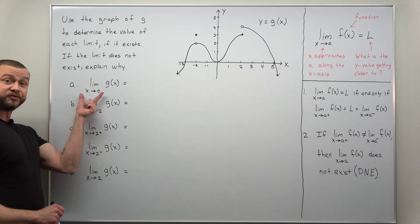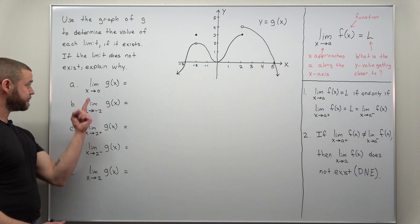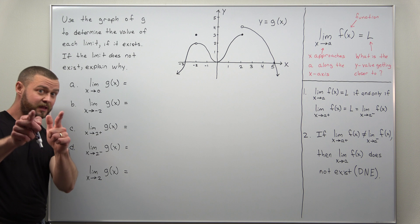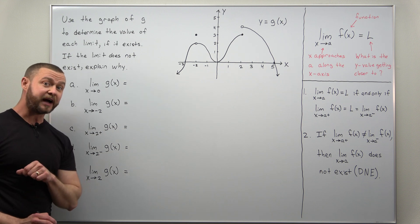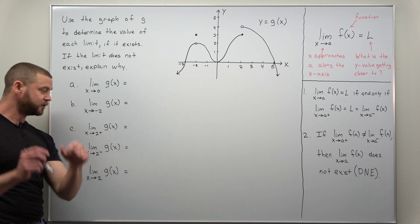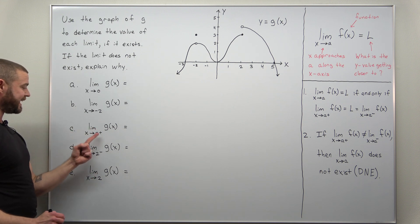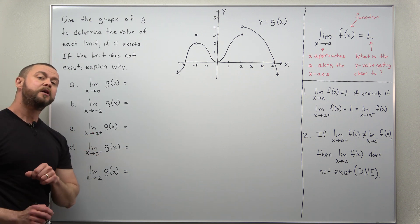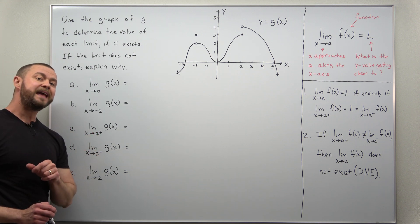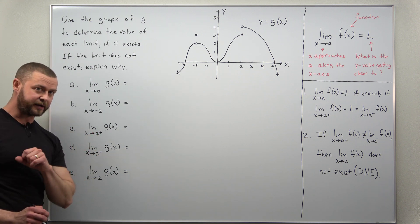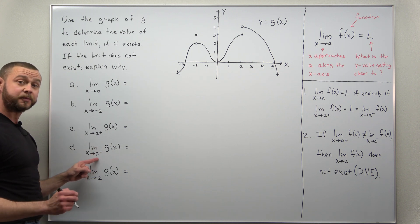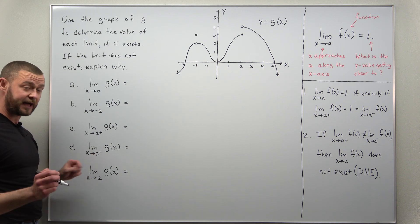First, notice we have a few different types of limits here. X approaches zero — that's a two-sided limit, we're approaching zero from both sides. The plus and minus notation down here indicates one-sided limits: X approaches two from the right and X approaches two from the left.